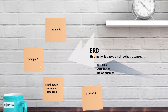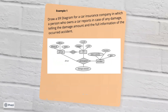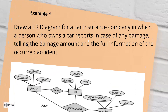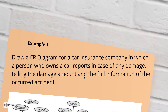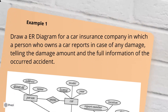Now moving forward we have another example: you need to make an ER diagram of a car insurance company. There is a person who owns the car. If there is damage to the car, it reports the amount of damage and gives information about the accident. So here you have three entities: car, person, and accident.